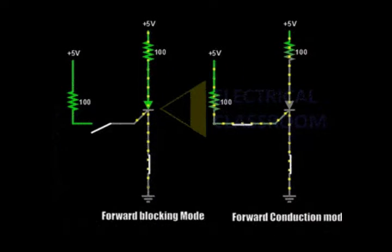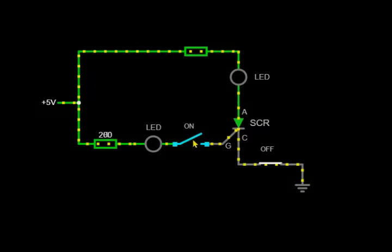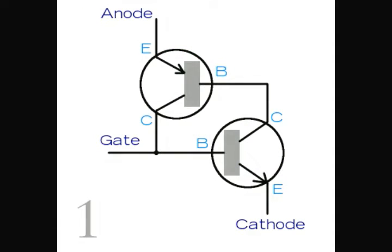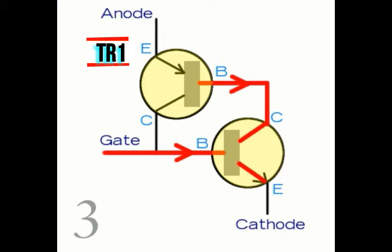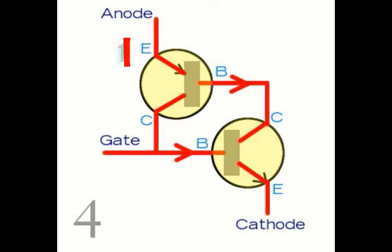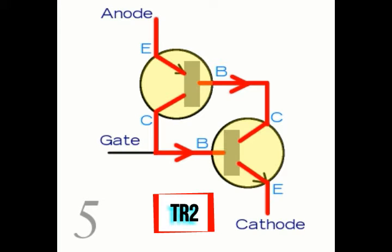If the anode base is positive relative to the cathode, the outer two PN junctions will be forward biased and the middle NP junction will be reverse biased. Therefore, the direct current is also blocked. If a positive current is injected into the base of the transistor TR2, the resulting collector current passes through the base of the transistor TR1. This in turn causes the collector current in the transistor TR1, which increases the base current TR2.